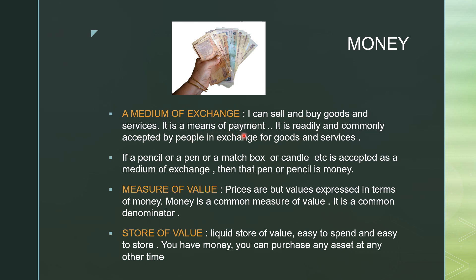These notes on screen are readily accepted, commonly accepted by people in exchange for goods and services. This is legal tender money — everybody accepts it and nobody can deny it. So this is the legal tender medium of exchange. In place of these notes, if a pen, pencil, matchbox, candle, or anything is accepted as a medium of exchange, then that particular item would be considered money.